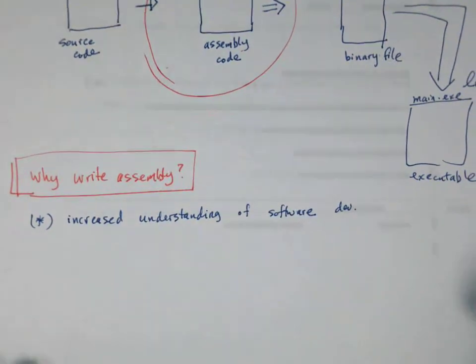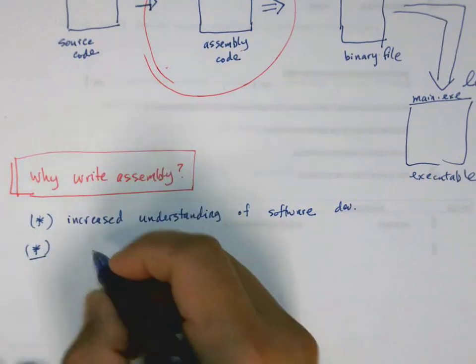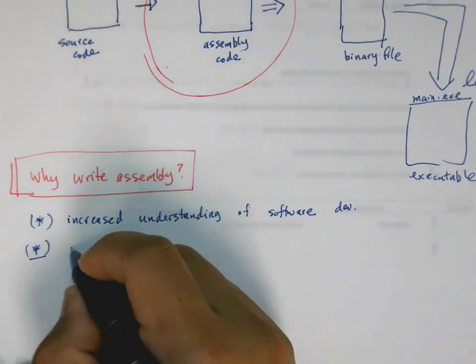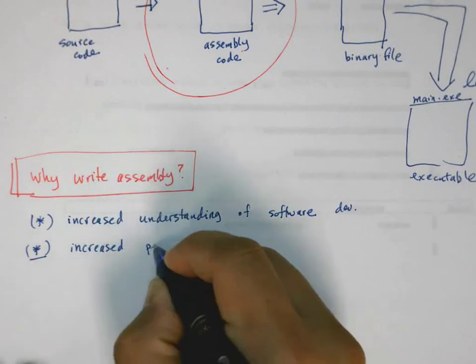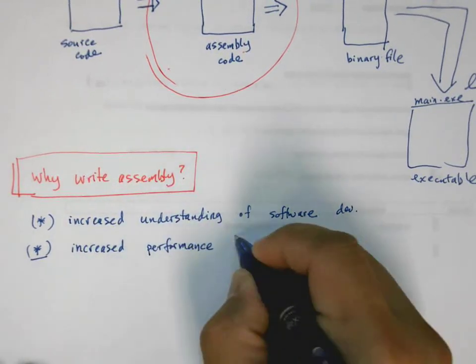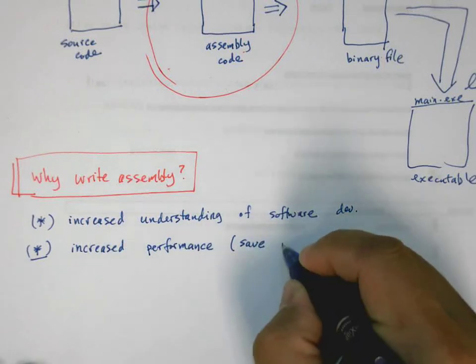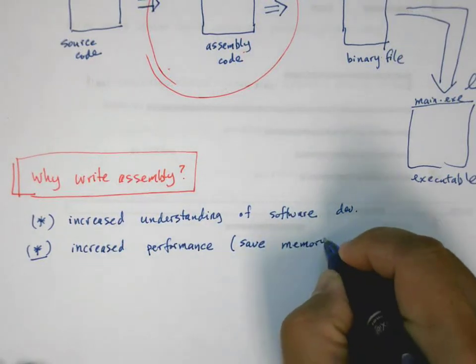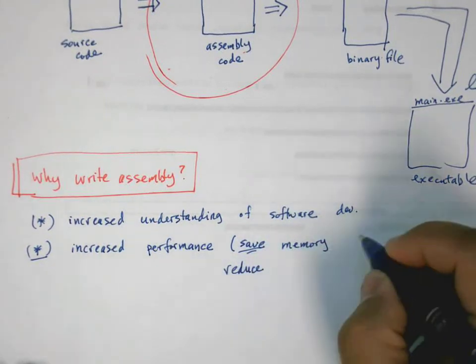Second, and I think this is the main benefit, is increased performance. In other words, if you can write code in assembly, you can save memory—save here means reduce, not store—save memory and CPU time.